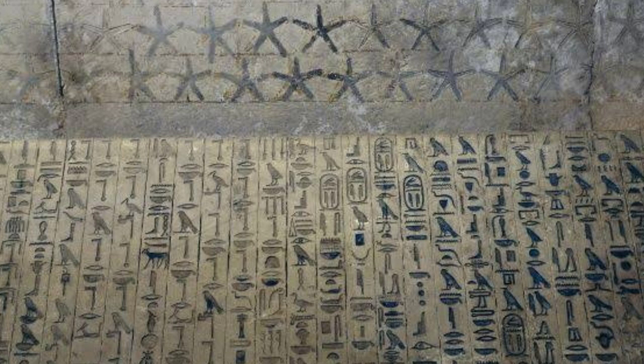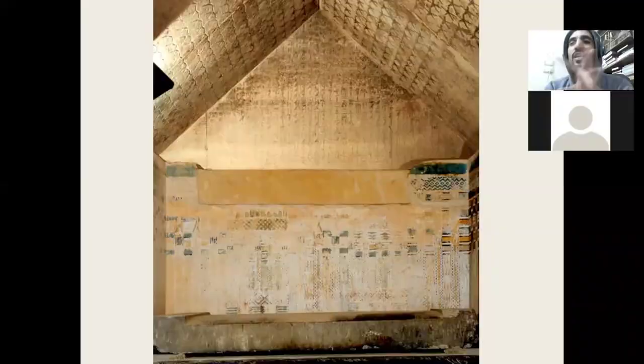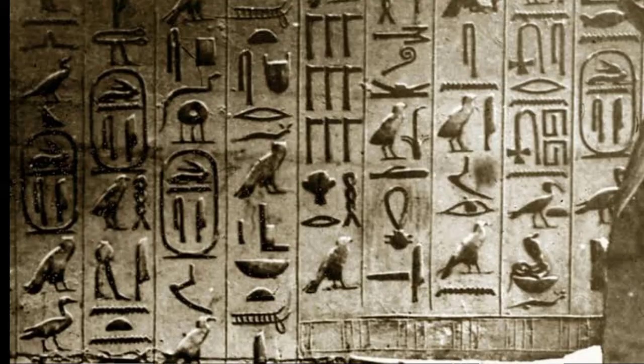Most of these phrases start with 'djed medu' — in hieroglyphics, that means 'words to be spoken,' something like the beginning of speech. Then it repeats the name of the ancient Egyptian king himself. So we are going to find the name of King Unas repeated more than 100 times inside the same pyramid.